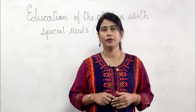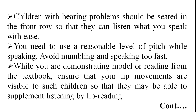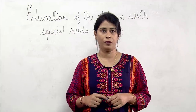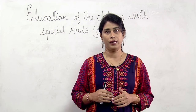Let us now look at children with hearing and speech impairment. Some children have hearing difficulties and some have difficulty in speaking. Children with hearing problems may also develop speech problems, so it is important to identify such children and take necessary steps to meet their educational needs. Children with hearing problems should be seated in the front rows. Use a reasonable level of speech while speaking, avoid mumbling and speaking too fast. While demonstrating or reading from the textbook, ensure that your lip movements are visible so children can supplement listening with lip reading. When writing on the blackboard, face the students rather than speak with your face towards the blackboard.